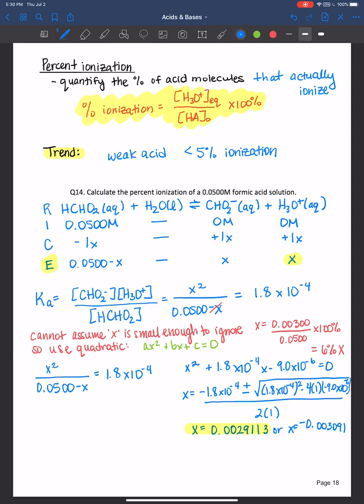And so the percent ionization for this 0.05 molar formic acid solution is equal to, remember it's the hydronium ion equilibrium concentration, so in this case that is x, divided by the initial concentration 0.05 times 100%.